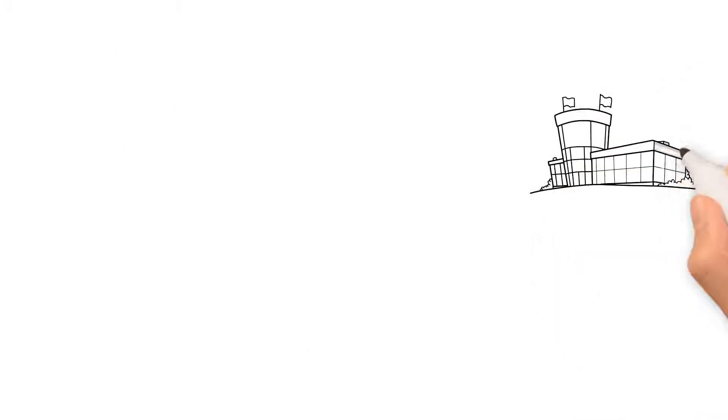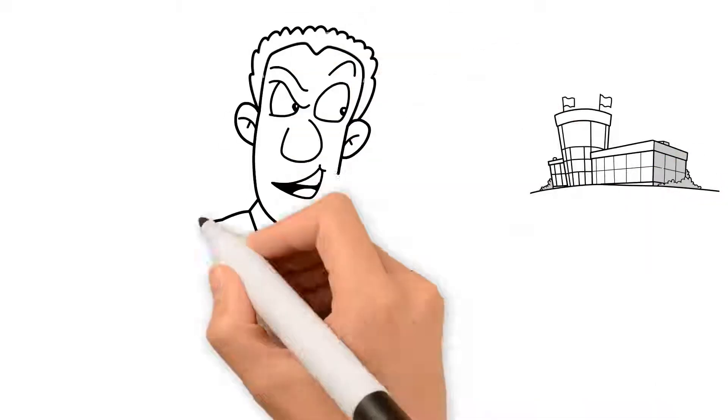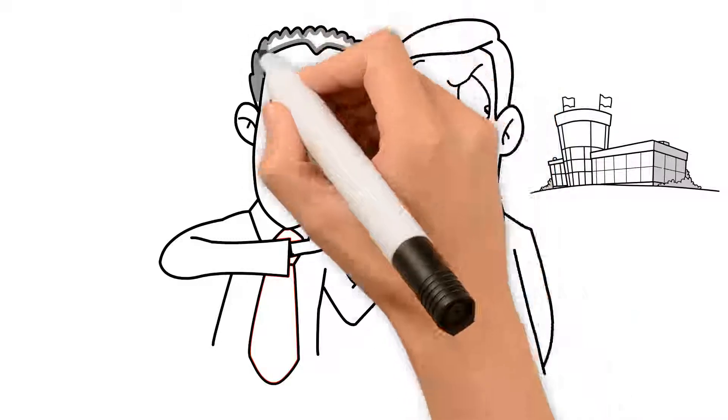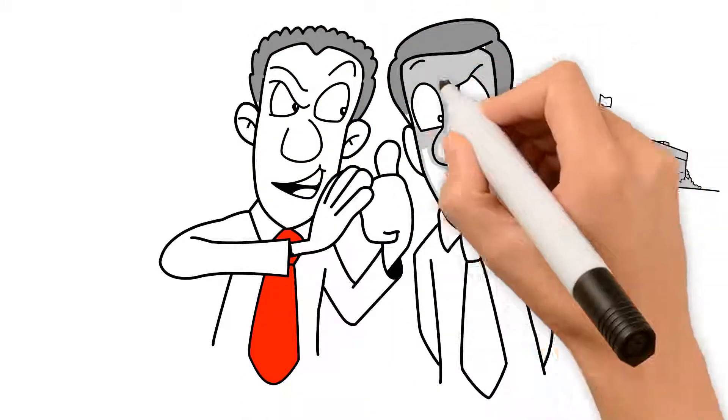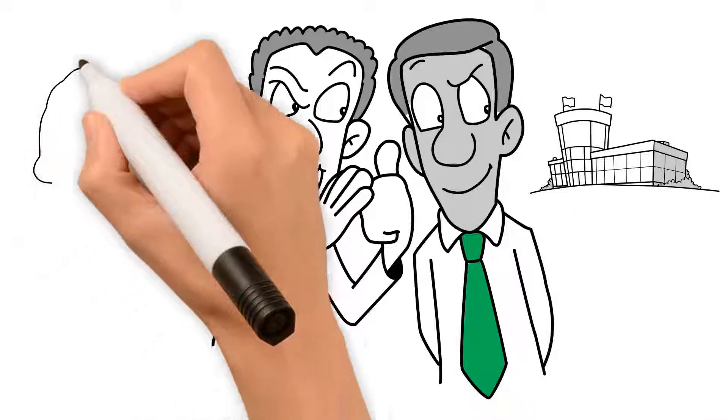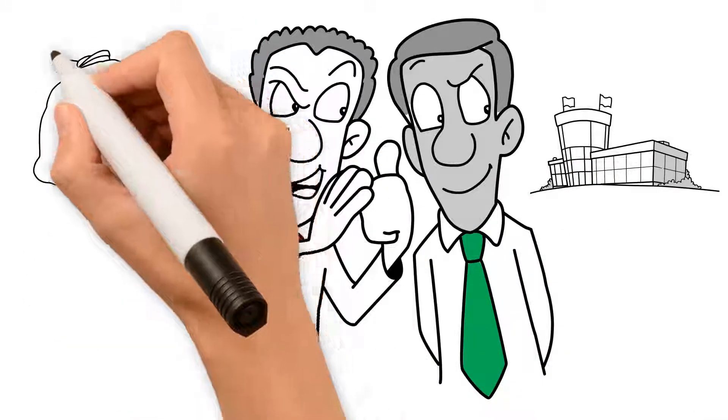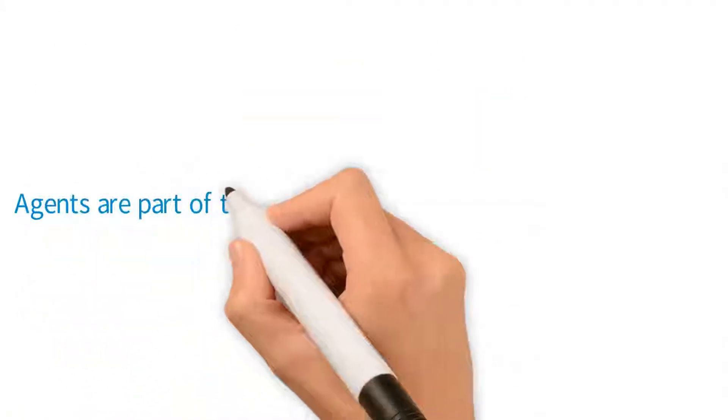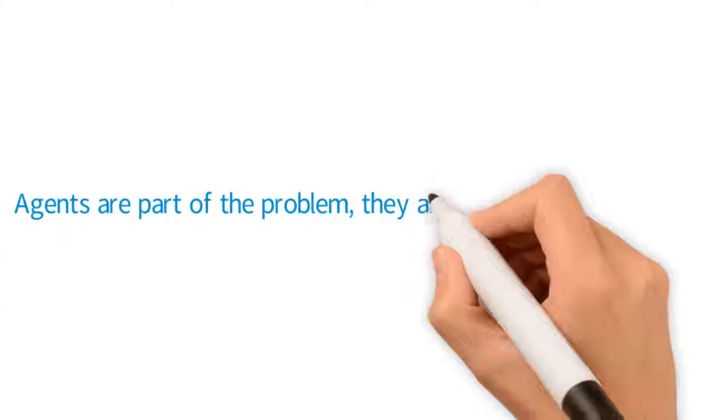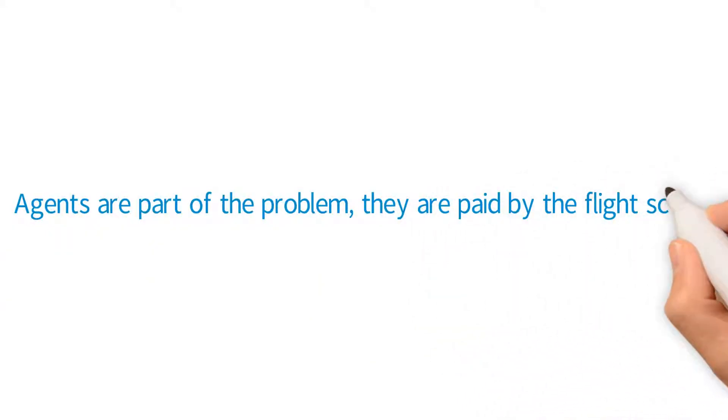It's very important for you to know that agents cannot do for you what Pocket CFI does because they are paid by the flight school. Agents receive money from the flight school when you begin your training or when you make a deposit. Their loyalty lies with the flight school because it's their job to recruit students for them. Agents are part of your problem because they know the truth about the quotes and how the school operates, but they will not tell you until it's too late, if at all.